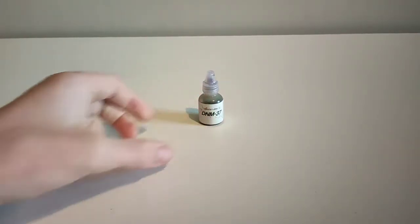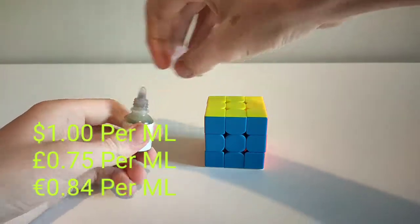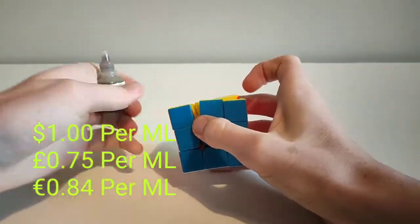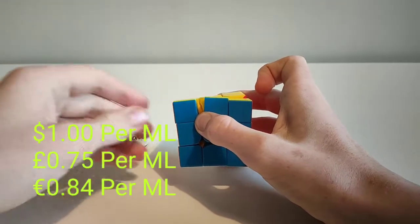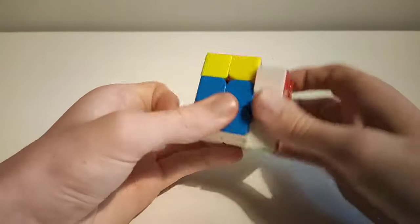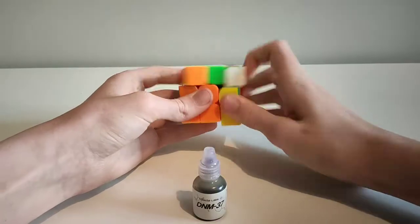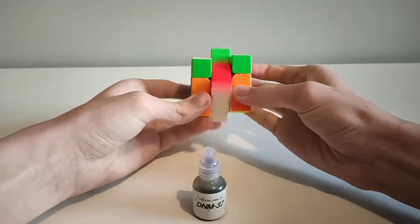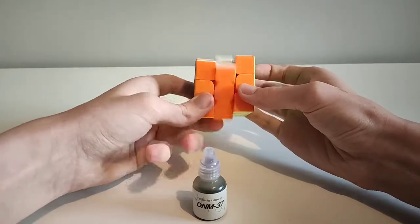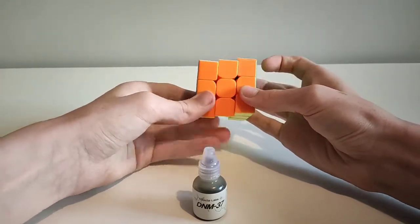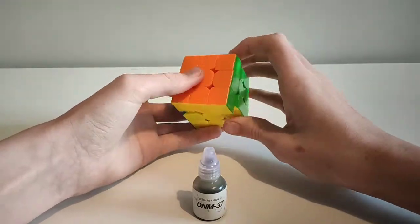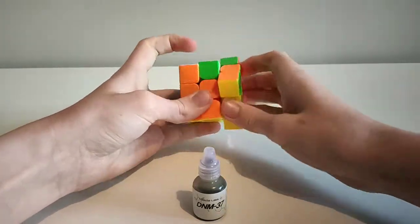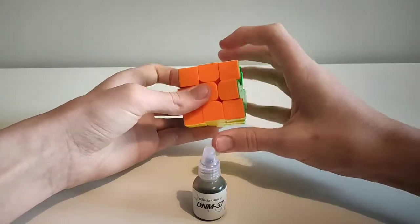Next up we have dnm37. dnm37 is very similar to angstrom compound V, water-based with an effect that speeds up the cube. Compared to angstrom compound V, dnm37 keeps the speed for a bit longer, before it eventually transitions into a slightly smoother feel.